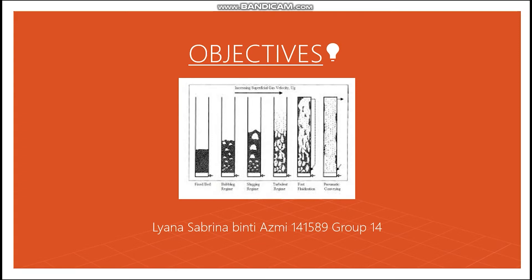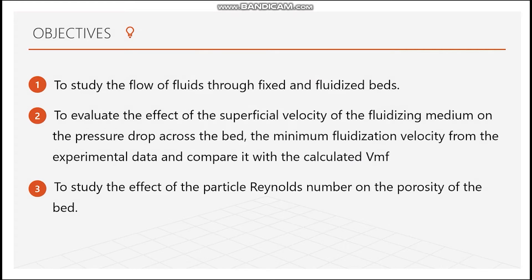Assalamualaikum and greetings everyone. My name is Liana Sabuna binti Azun. I am going to present the objectives of this experiment. There are three main objectives. The first objective is to study the fluid flow across fixed and fluidized beds. The second objective is to determine how the superficial velocity of the fluidizing medium affects the pressure drop across the bed, and to compare the minimum fluidization velocity obtained from the experiment with its theoretical value. The last objective is to study the effect of Reynolds number on the porosity of the bed.